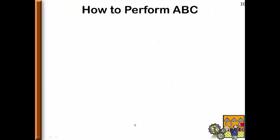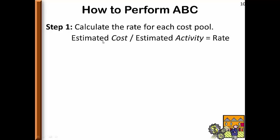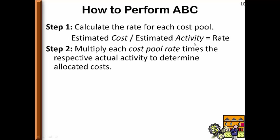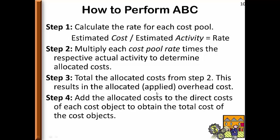To perform ABC, the first step is to calculate the rate for each cost pool: estimated cost over estimated activity. Remember that the numerator contains only indirect cost. The next step is to multiply each cost pool rate by the actual activity, which gives us allocated cost. Then we total the allocated cost from step two — this is the total allocated to the product, sometimes called applied overhead. Finally, we add the allocated cost to the direct cost to get the total cost of the cost object. If we want a unit cost, divide by the number of units produced during the period.